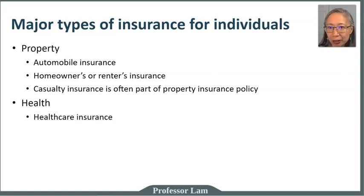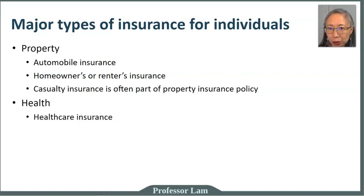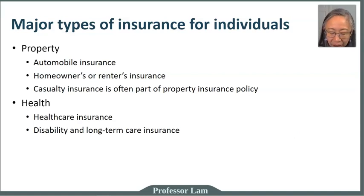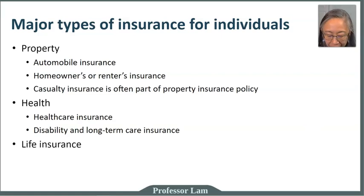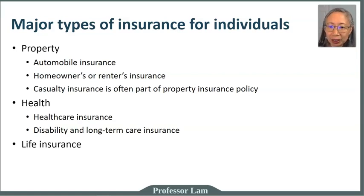Similarly, if you buy a house with a mortgage, the mortgage company will require homeowners insurance. Casualty insurance is often part of a property insurance policy and in many cases is required by law when it comes to automobile insurance. Another major type is health insurance, which covers healthcare costs — a significant concern in the United States, as medical debt is one of the main causes of personal bankruptcy. Related types include long-term disability insurance, long-term care insurance, and finally life insurance, which pays a benefit when someone dies.